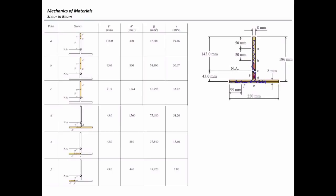Now for point E, which is in the horizontal element — in the flange — I cut the section right where the flange and the web connect together. The area for Q is just half of 220 times 8. That gives the area, and I multiply by the distance of that subsection to the centroid of the intersection. This is how we understand the difference between vertical and horizontal shear.